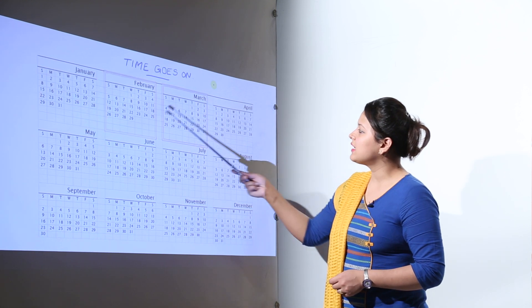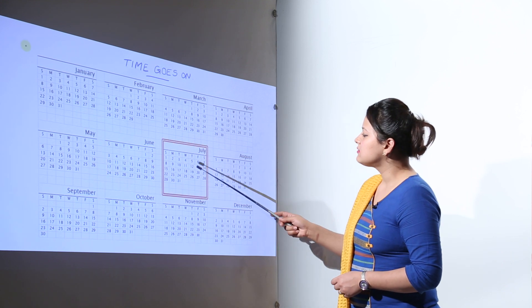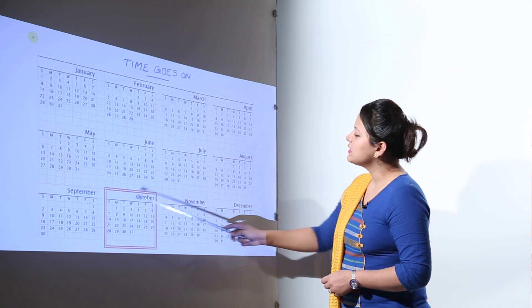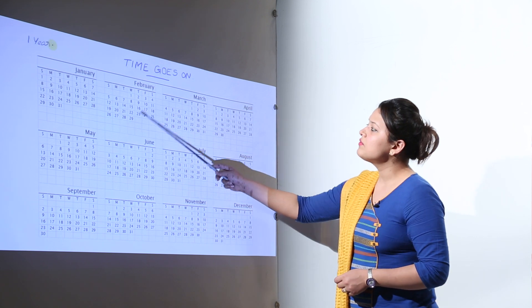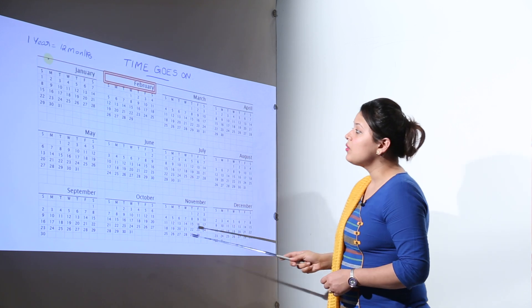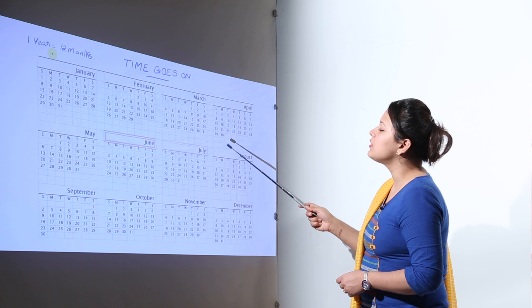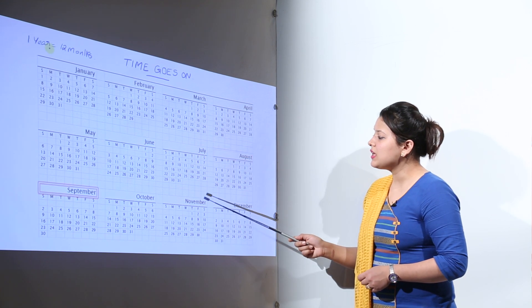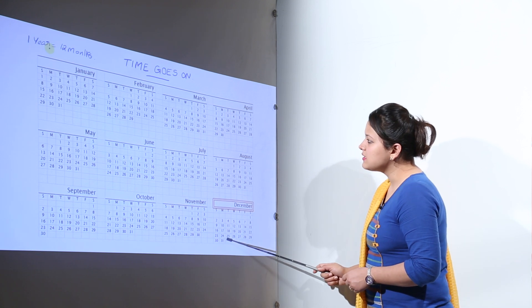So let us count. We have the first, second, third, fourth, fifth, sixth, seventh, eighth, ninth, tenth, eleventh and twelfth. So we have total 12 months in one year. Now those months are January, February, March, April, May, June, July, August, September, October, November and December. So these are the 12 months.